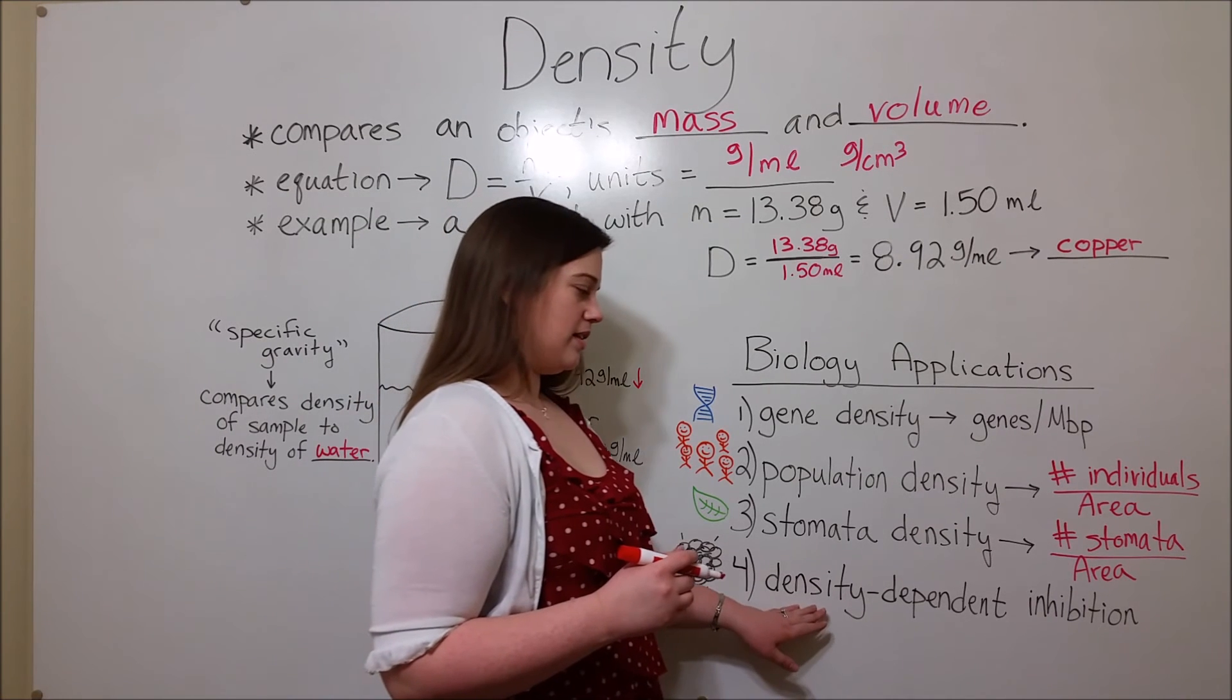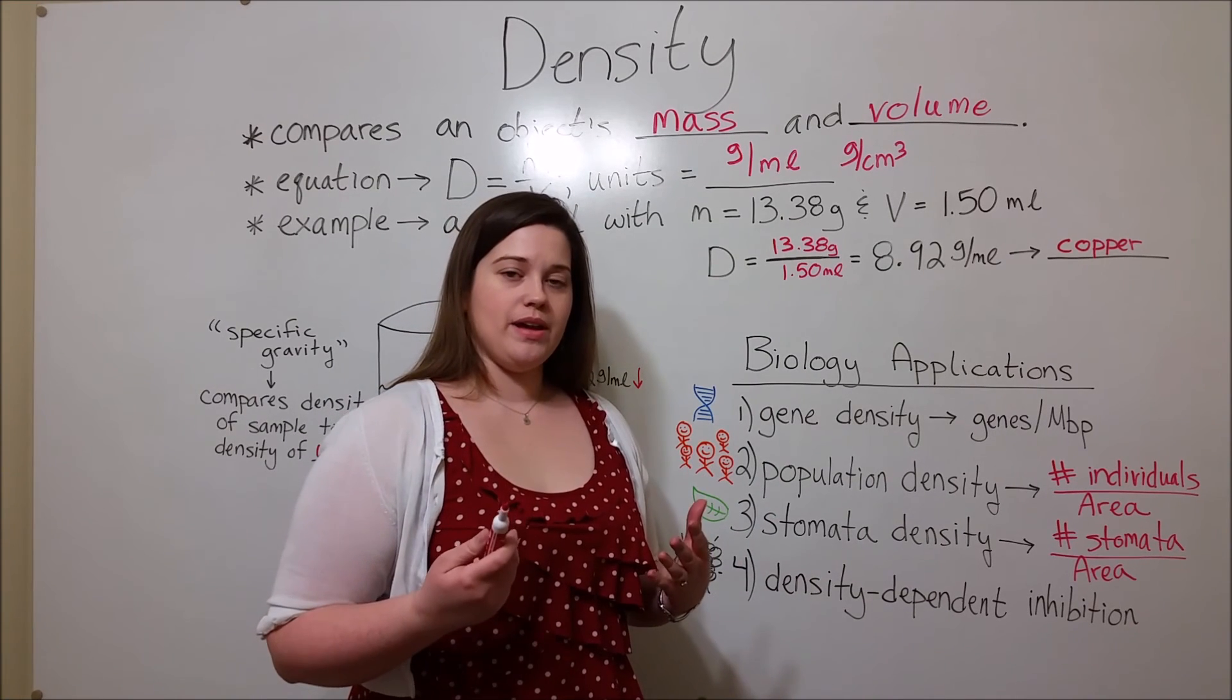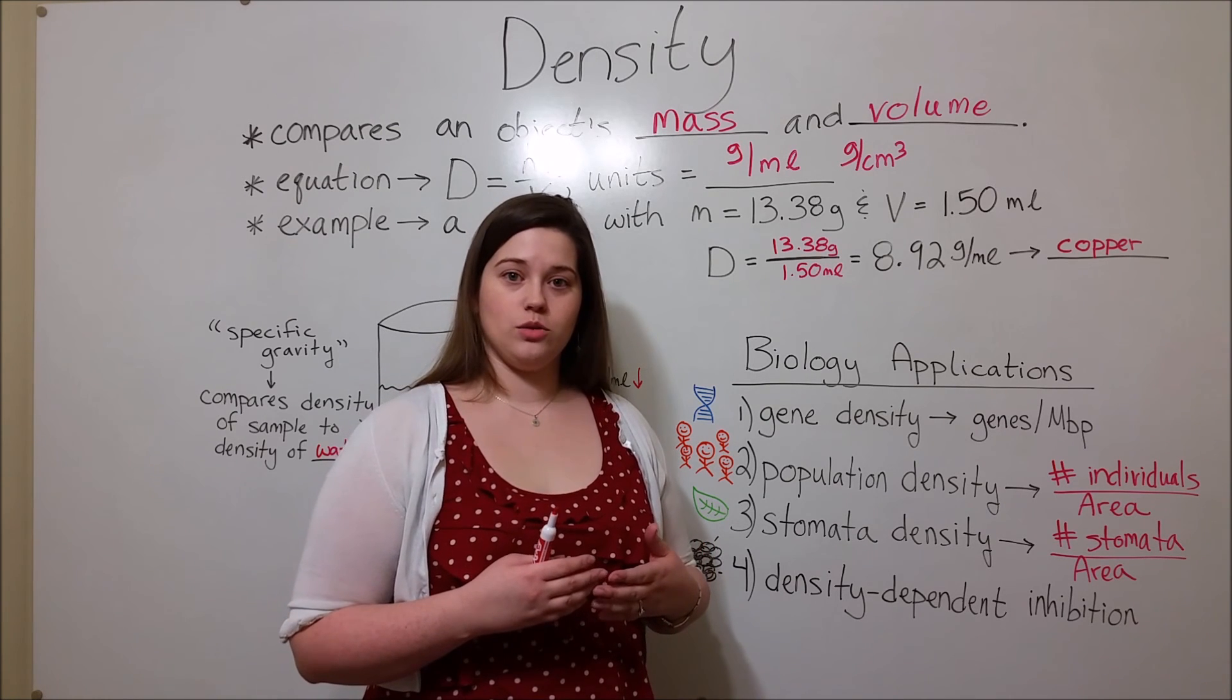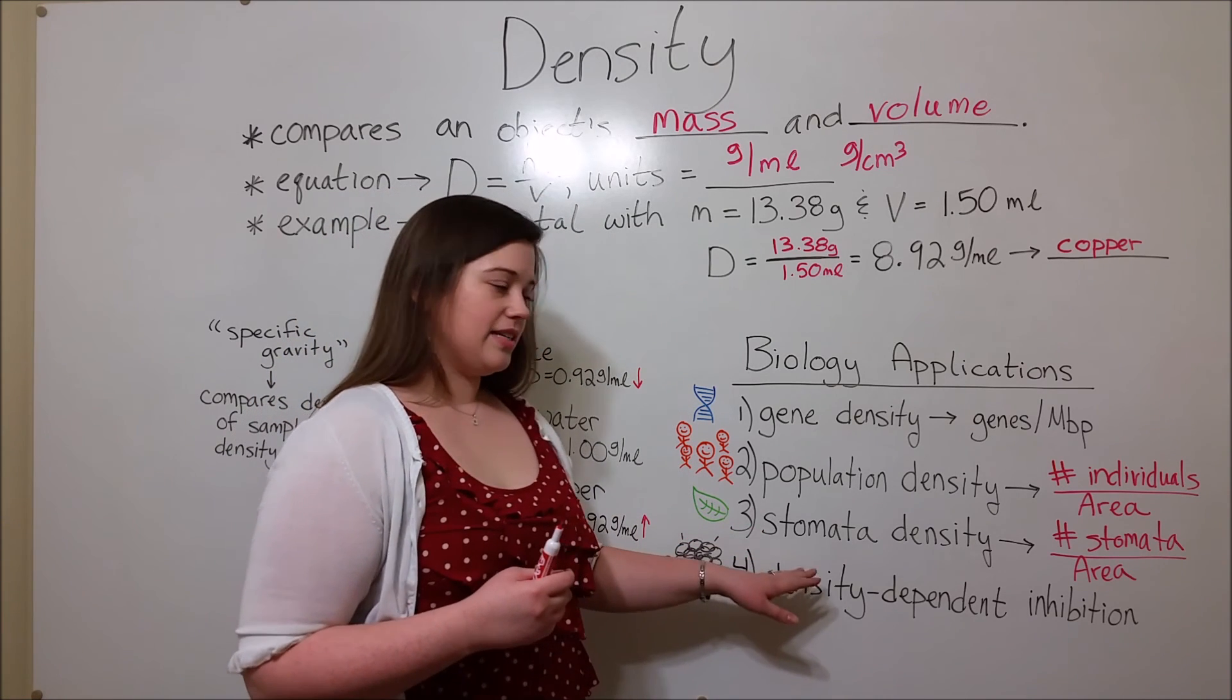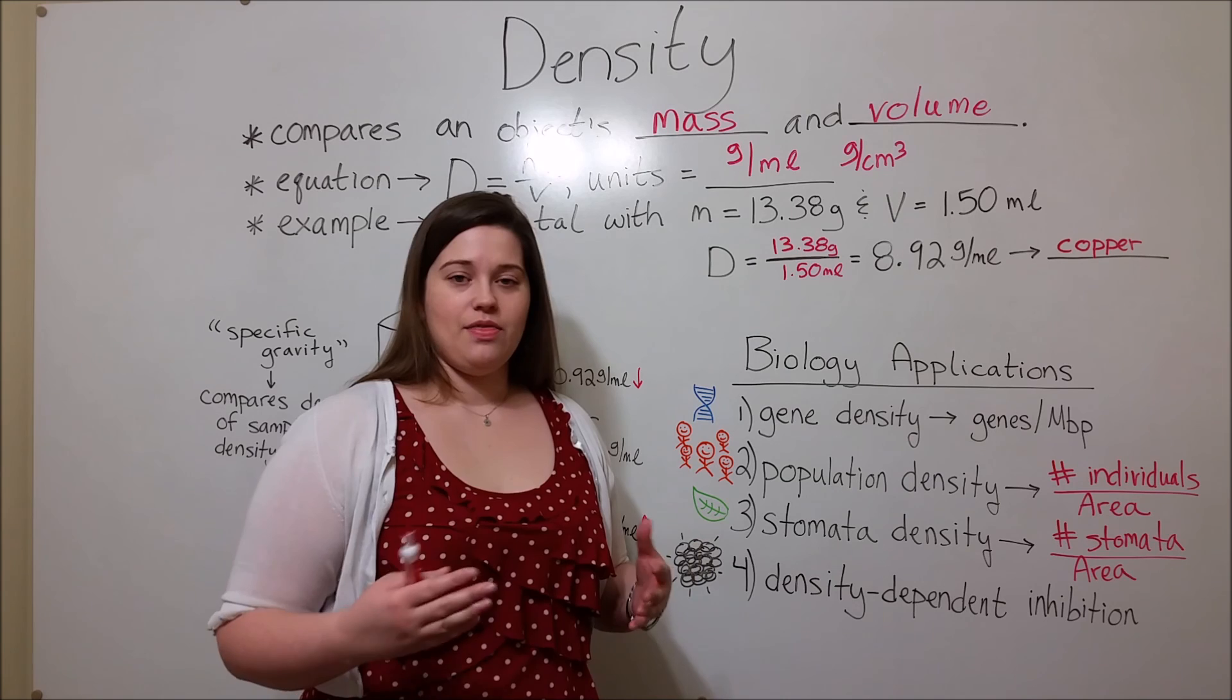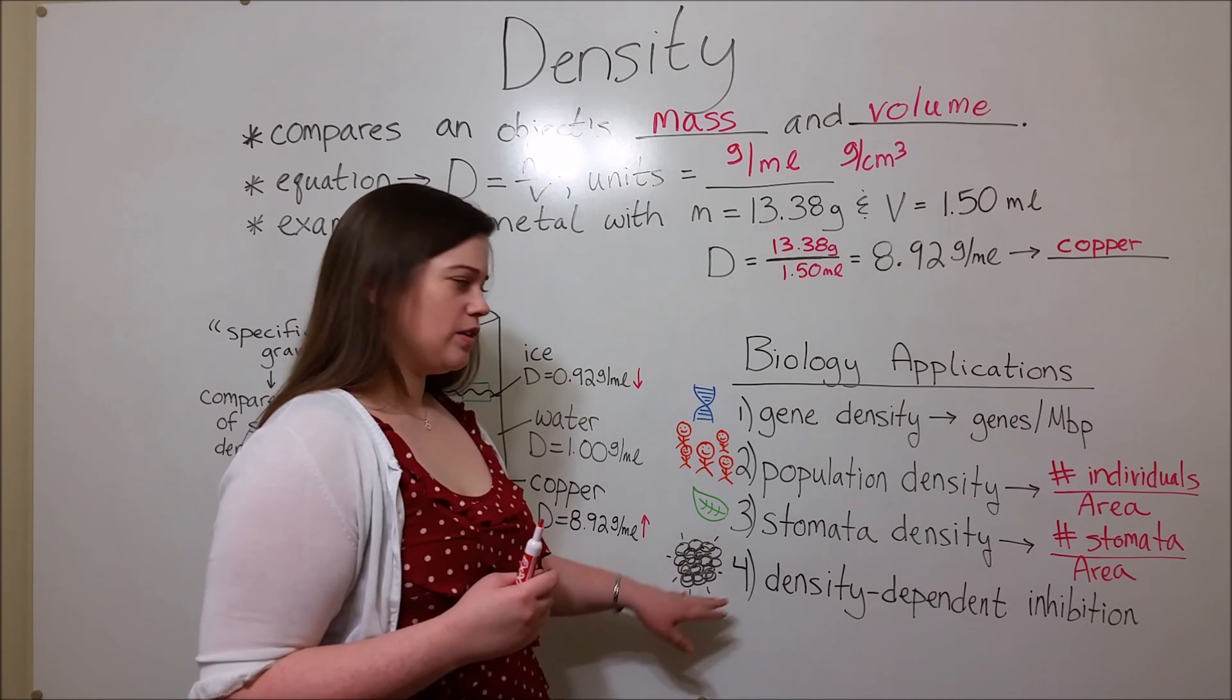And finally, there's something called density-dependent inhibition. What that means is that most cells receive cues from their environment, and when they reach a certain density in the body, they stop growing. That is how normal, healthy cells work. Cancer cells, on the other hand, lack this density-dependent inhibition. Even when they grow very densely, they keep growing, keep dividing, keep multiplying, and rather than stopping like normal tissues, they grow out of control, resulting in a tumor.